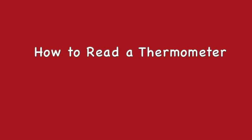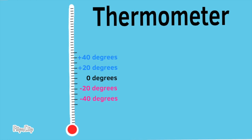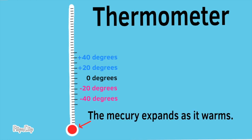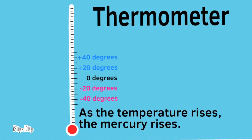How to Read a Thermometer. The mercury in a thermometer expands as it warms. As the temperature rises, the mercury rises. Here you can see the mercury at negative 40 degrees, at negative 20 degrees, at zero degrees, at positive 20 degrees, and at positive 40 degrees. Take a close look.